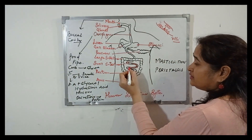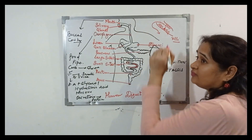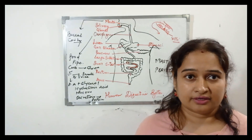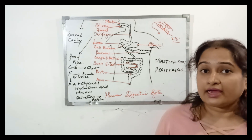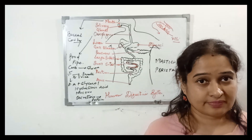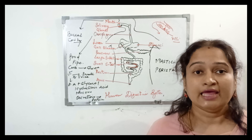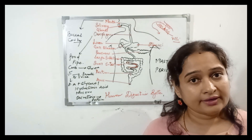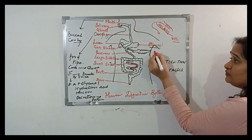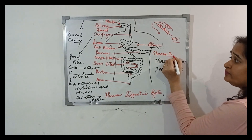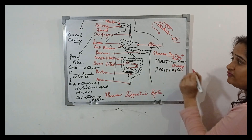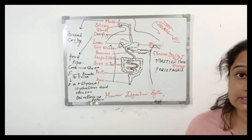Through the blood, this food is carried to the entire body — to every body cell, every body organ, every part of our body. When it reaches every part, the process of assimilation takes place. The digested food is broken down further in the presence of oxygen: glucose is converted into carbon dioxide and water along with energy, which is used for various purposes, growth, and repair.